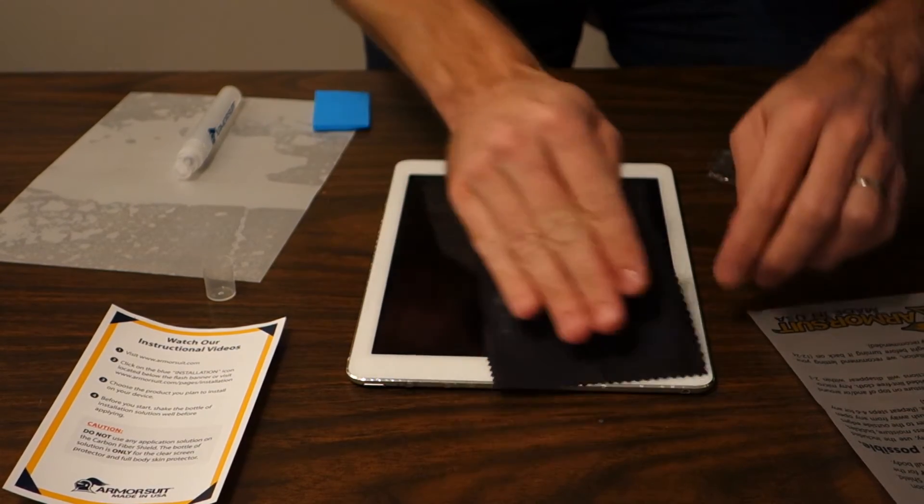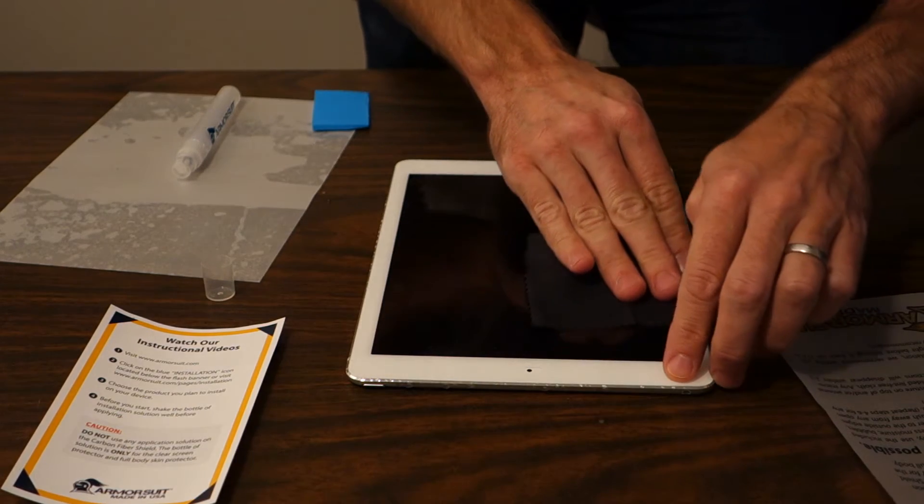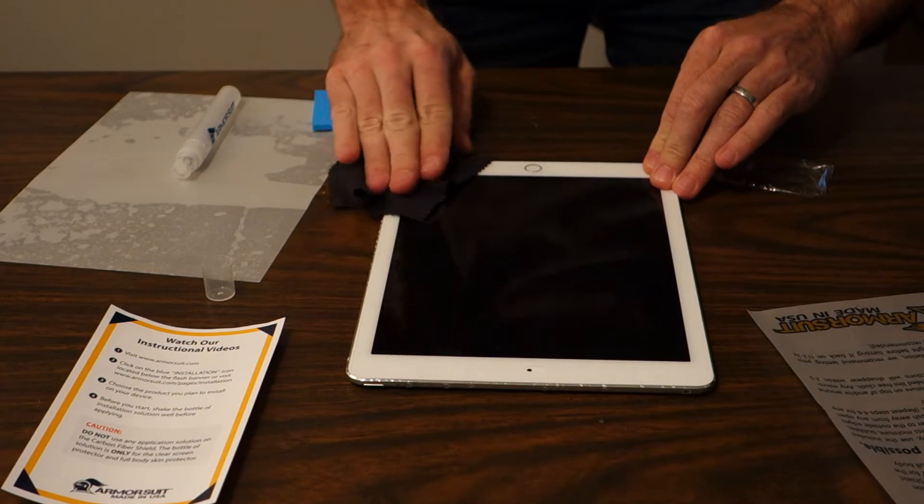Soak up extra moisture with the cloth. Any bubbles and imperfections will disappear in two to three days. Let your device sit overnight for 12 to 24 hours before turning it back on.